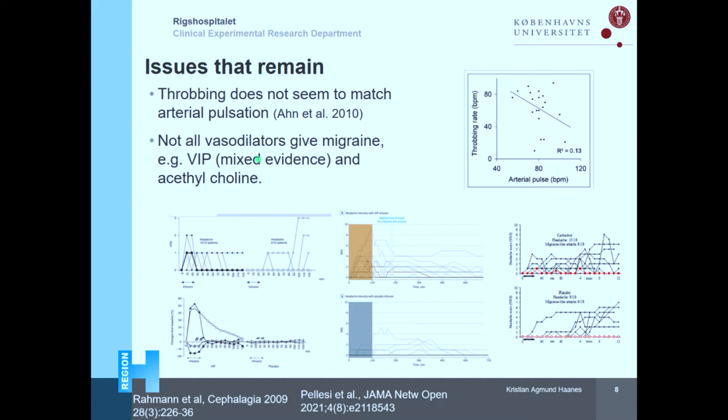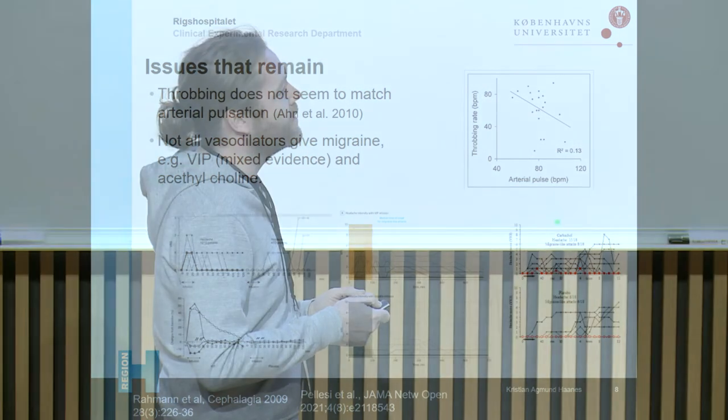Not all vasodilators give migraine — for example, VIP did not give migraine-like attacks, though in newer studies with longer exposure you can see migraine-like phenotypes. Acetylcholine is a very different vasodilator that vasodilates through the endothelium, and it also did not give a migraine attack. So maybe there is still something specific about what type of signaling molecules and mechanisms are needed. The link between vasodilation and migraine is not set absolutely in stone — it's between certain vasodilating compounds that give the migraine phenotype.